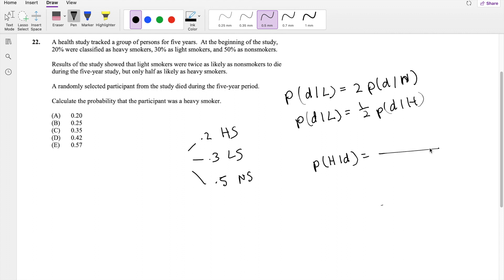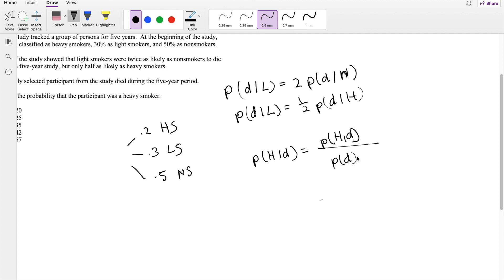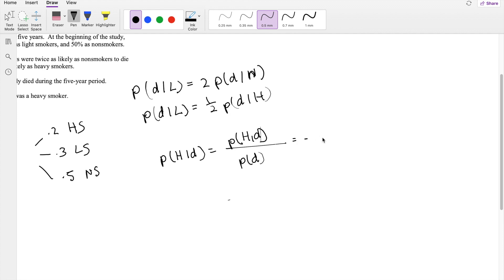So this is equal to, by the conditional probability formula, the probability of H and D divided by the probability of D. And by the law of total probability, in Bayes' theorem, we can break this down into the probability that they were dead given heavy smoker times the probability that they were heavy smoker. And the denominator,